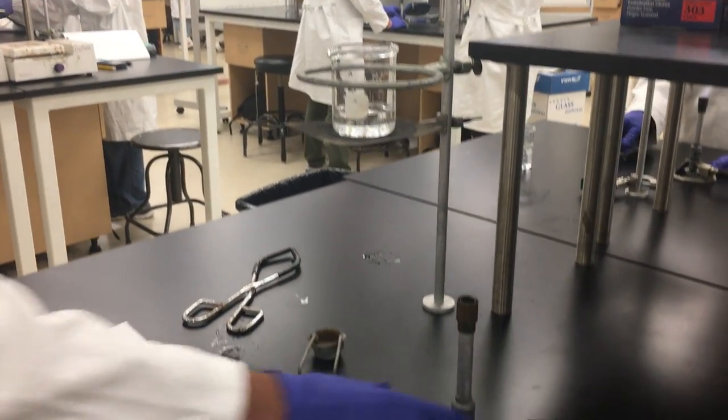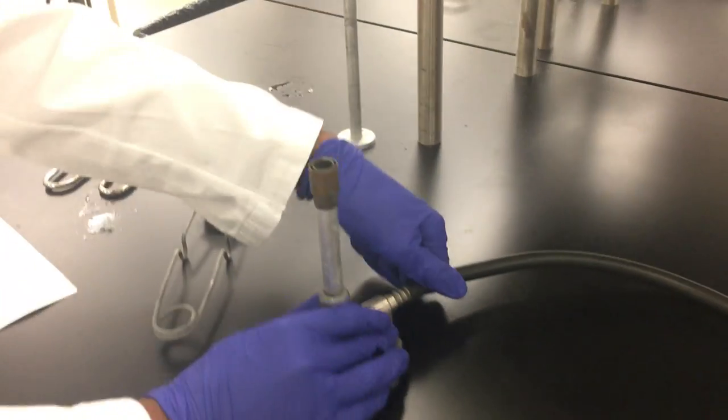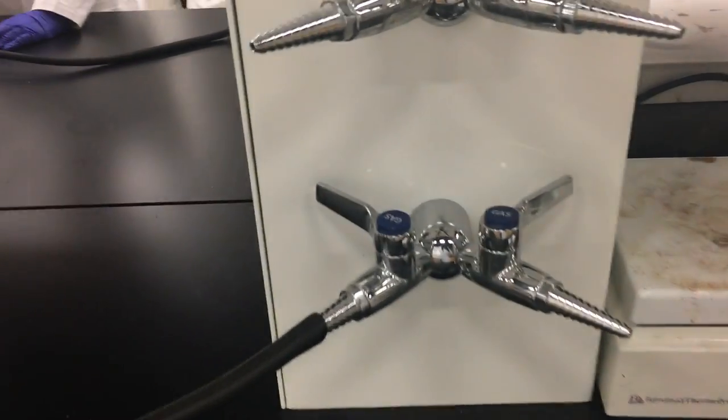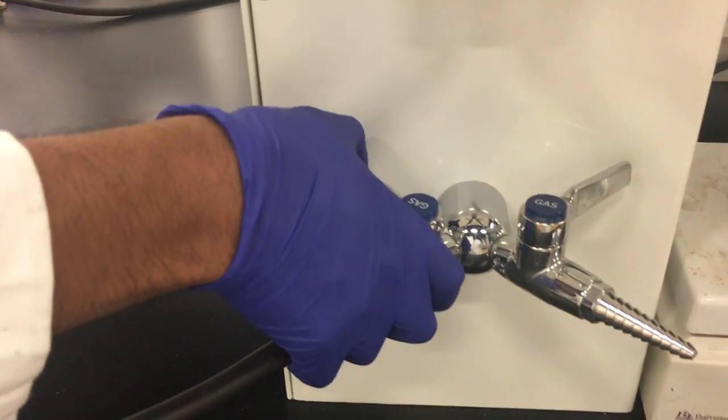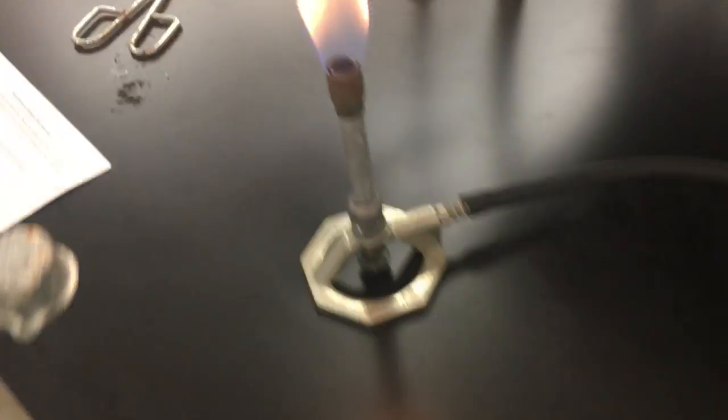In order to actually light the Bunsen burner we're going to have to open the gas flow and then use the striker on top of the burner. So we're going to open up the gas flow right there. You can hear the gas running. And then you're going to take your striker and light it.